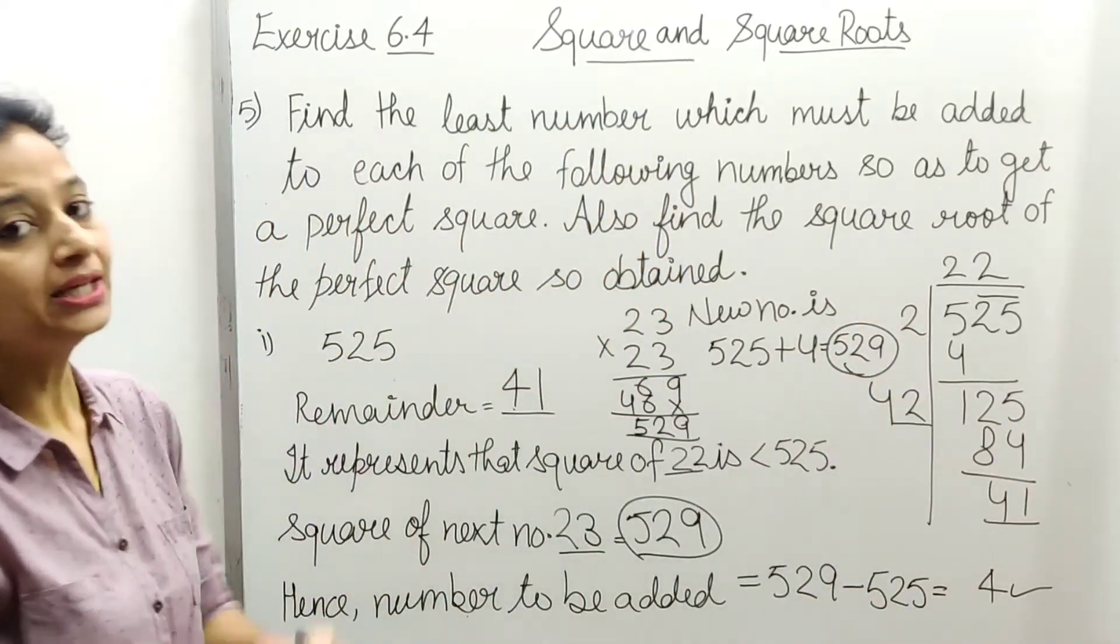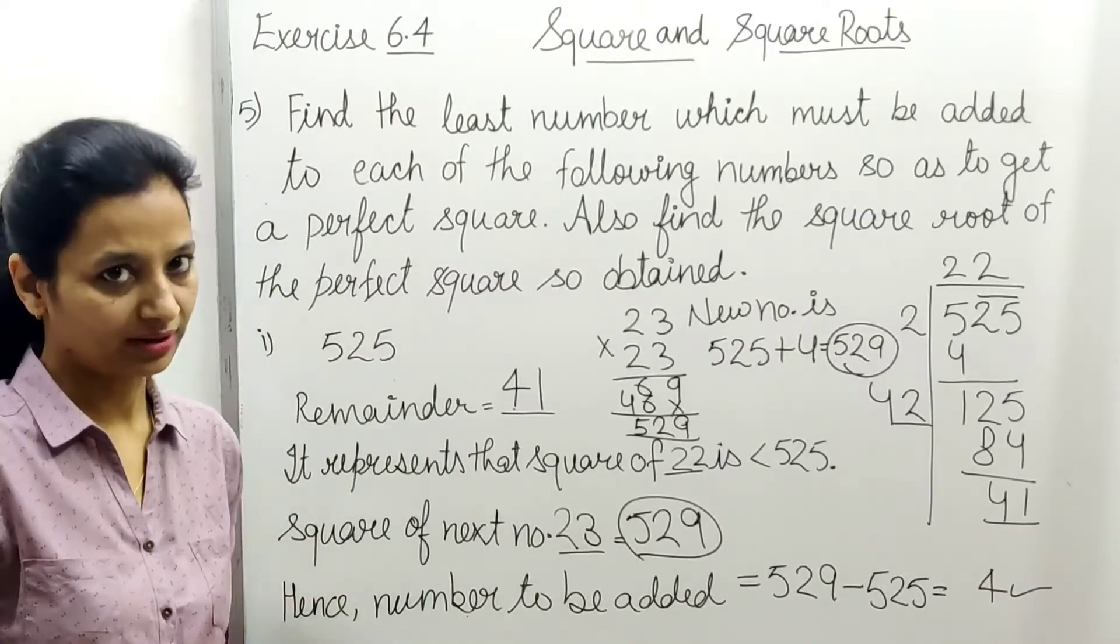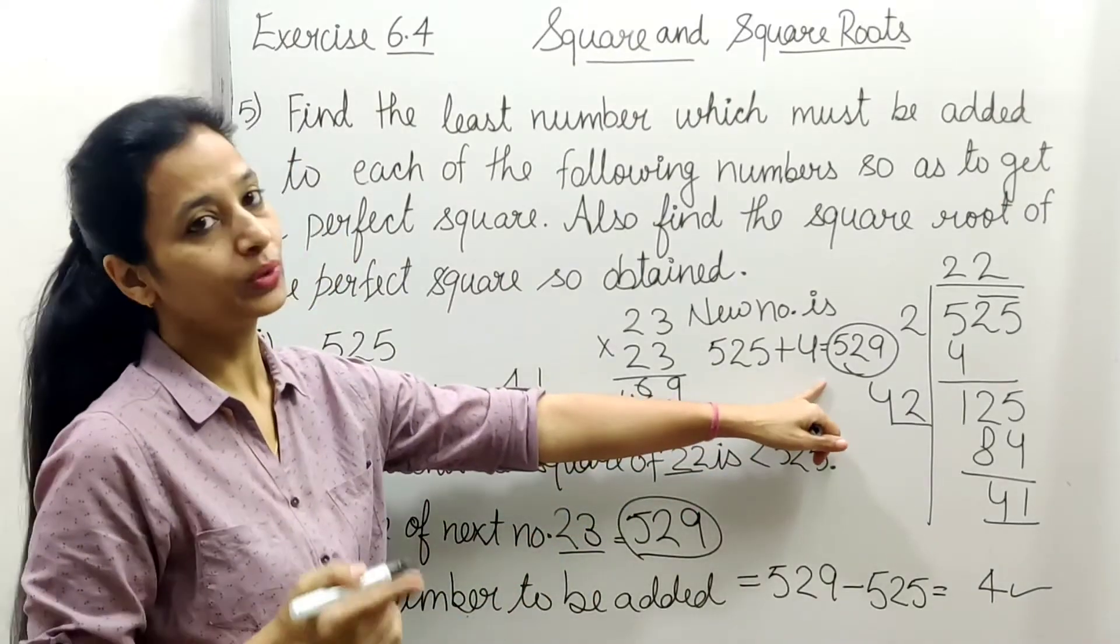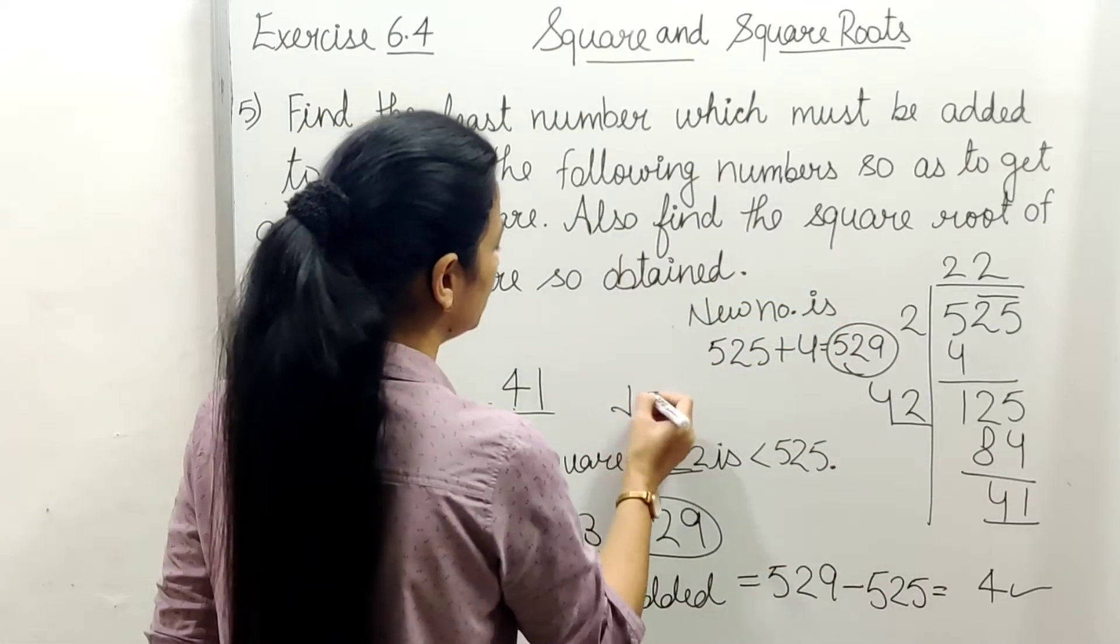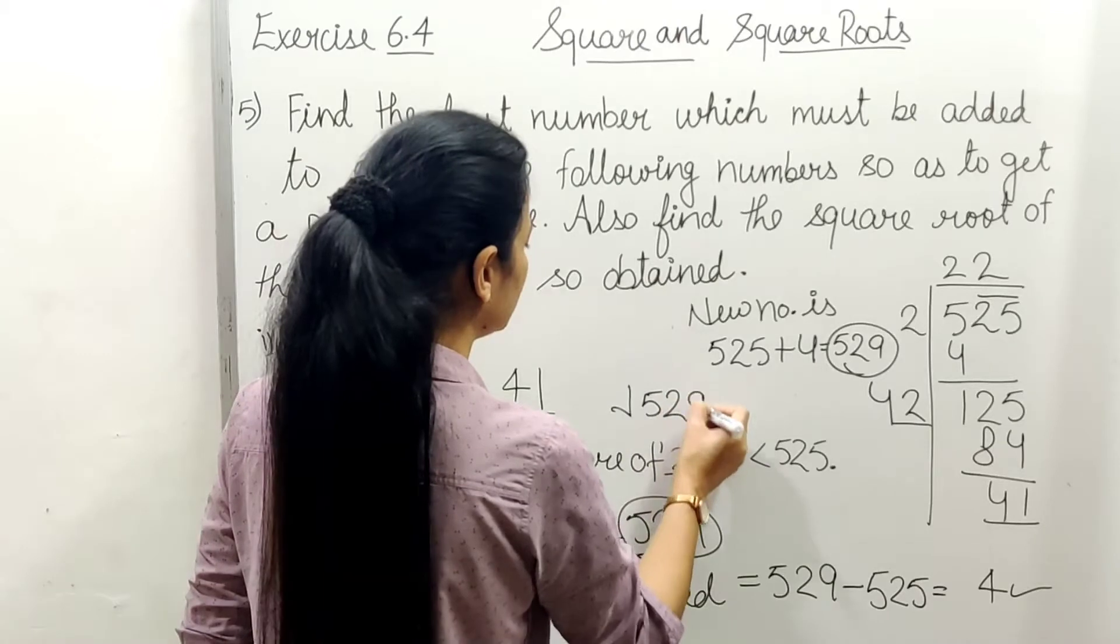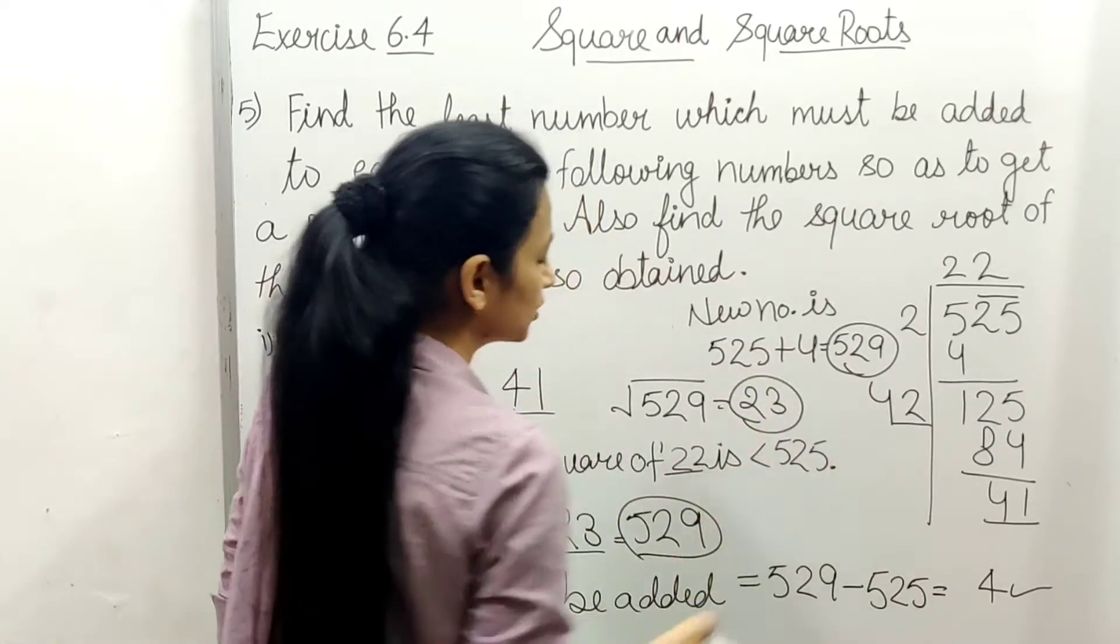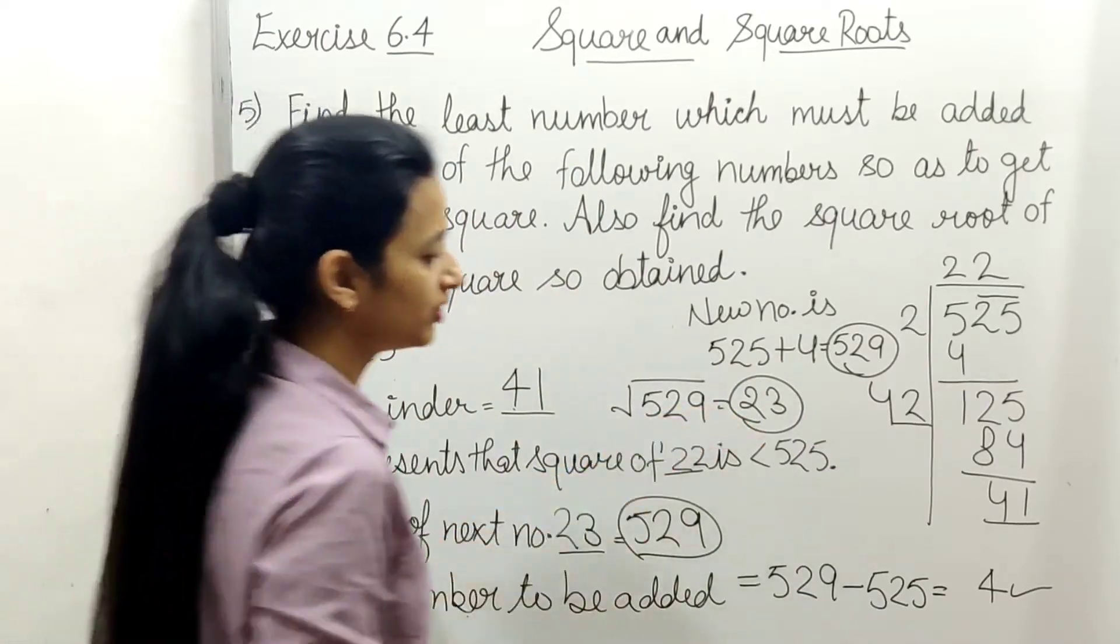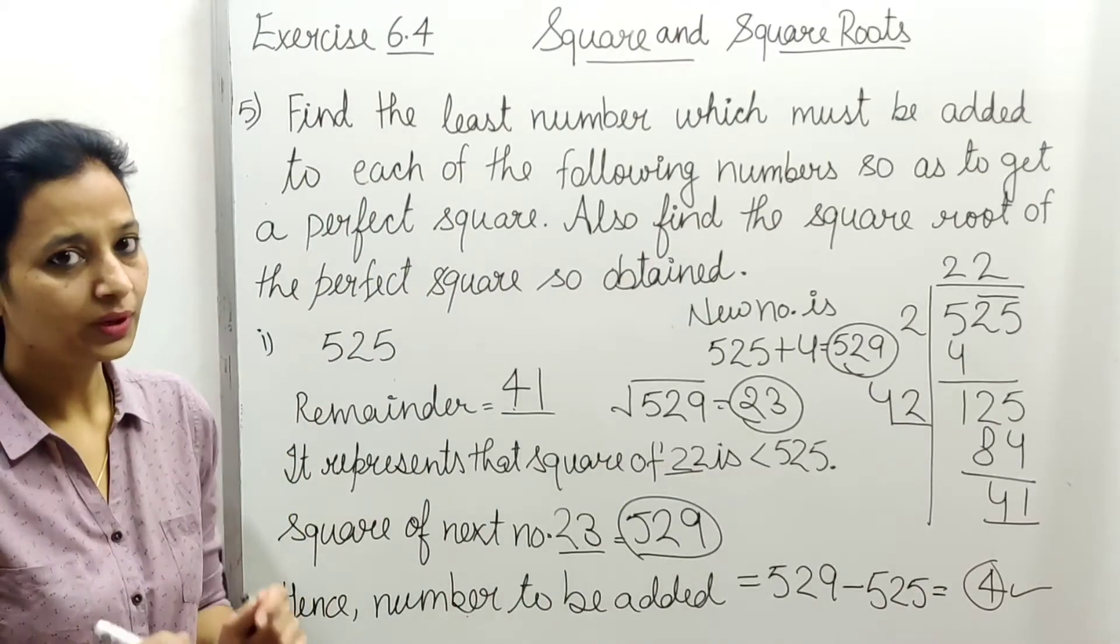529 is that new number which is a perfect square. Now we need to find its square root. Square root of 529 equals 23. So our answer is 23 and 4. I hope you understand.